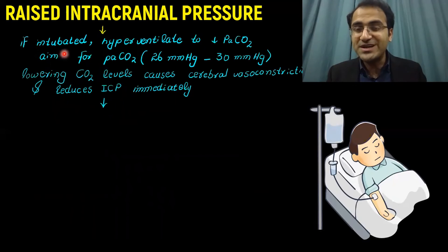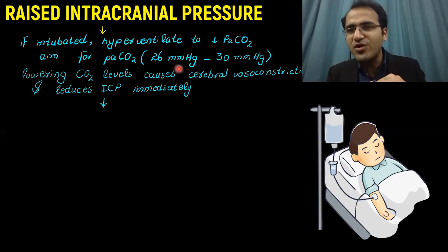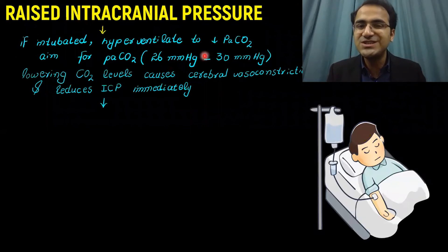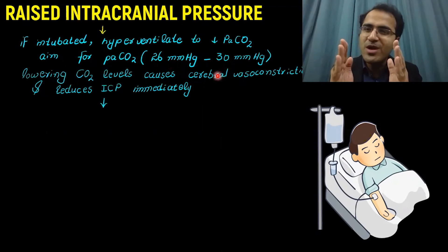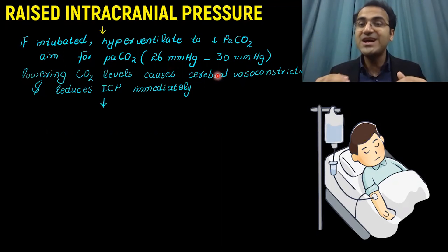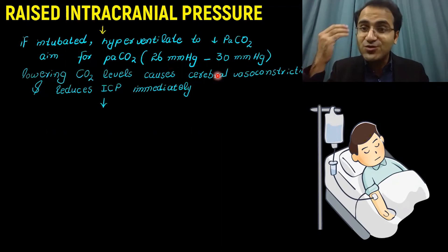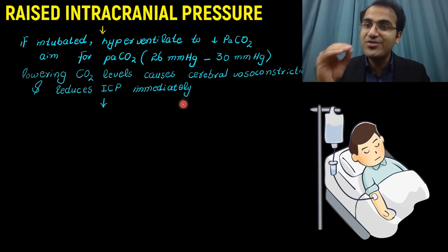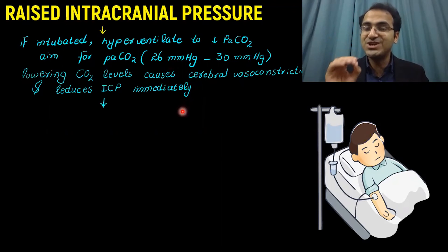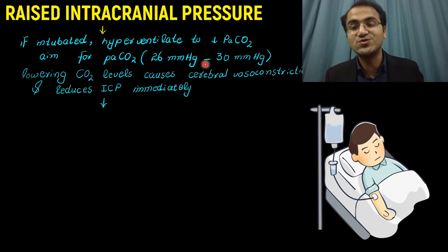If the patient is intubated, you can slightly hyperventilate the patient to reduce PaCO2. Normal PaCO2 is 35–45 mmHg; you should set the ventilator to target PaCO2 of 26–30 mmHg. Lowering CO2 causes cerebral vasoconstriction, which reduces intracranial pressure immediately. Hyperventilation is therefore a very important step in reducing intracranial pressure.